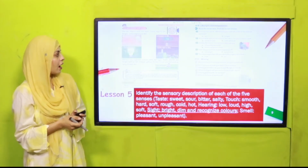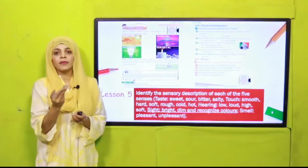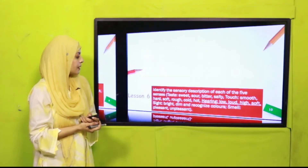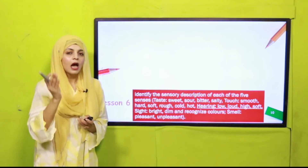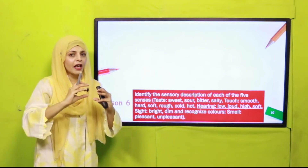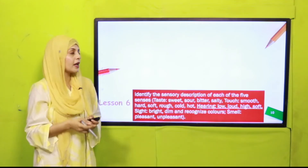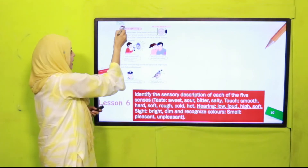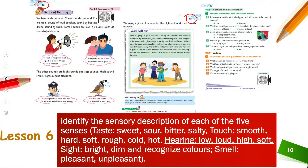The pages included in Lesson Number Five are page number 85, and the sense discussed here is the sense of sight. Then comes Lesson Number Six, where we will discuss the sense of hearing — loud sounds, soft sounds, which sounds are pleasant and which are very loud or noisy. The pages included for Lesson Number Six are page number 86, page number 87, and a practice page on page number 94.